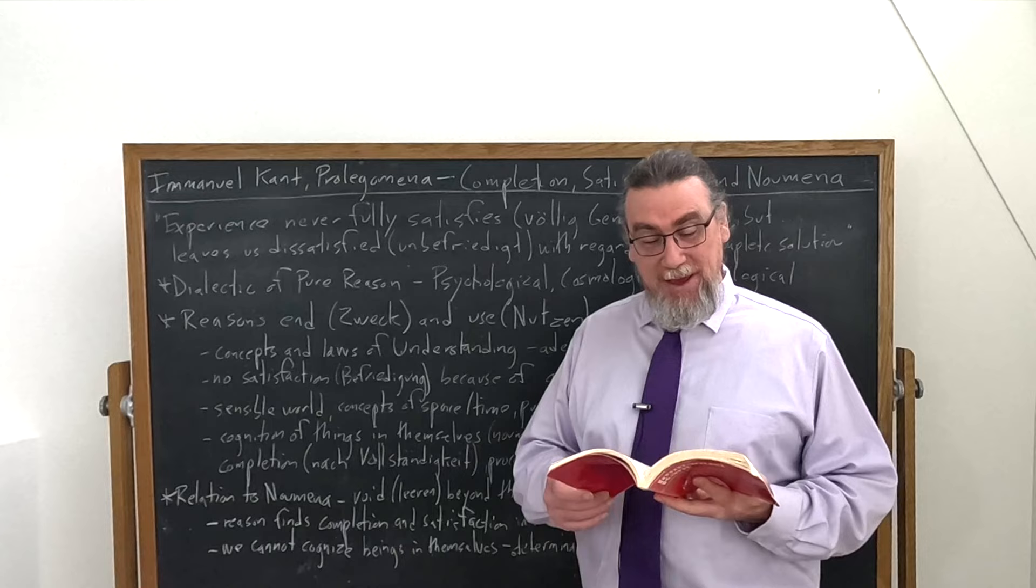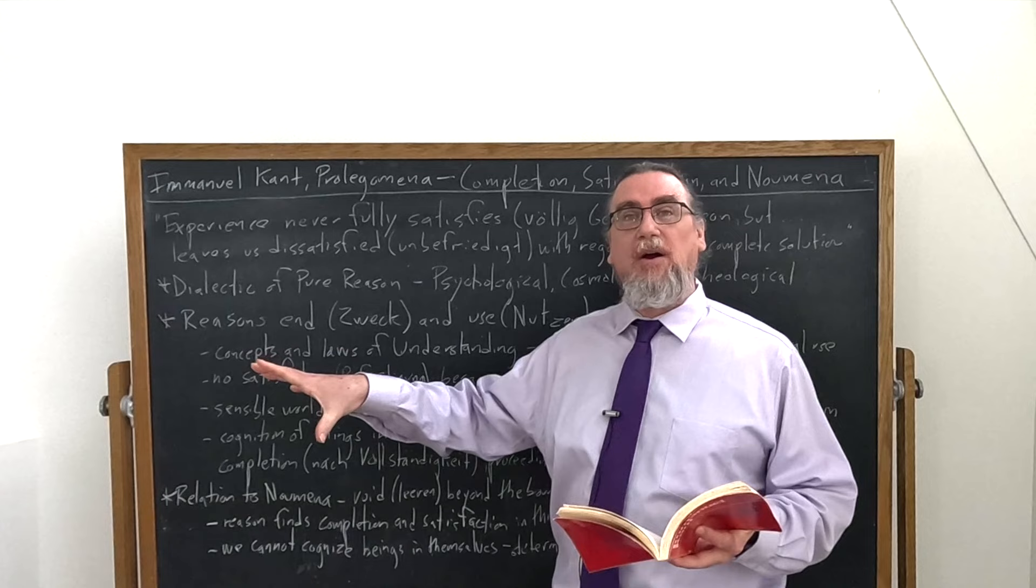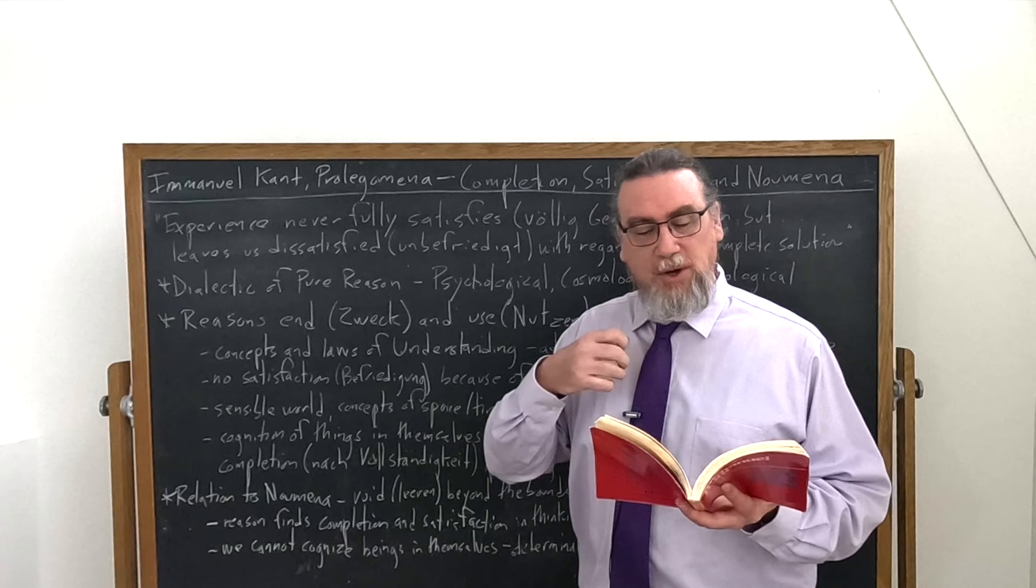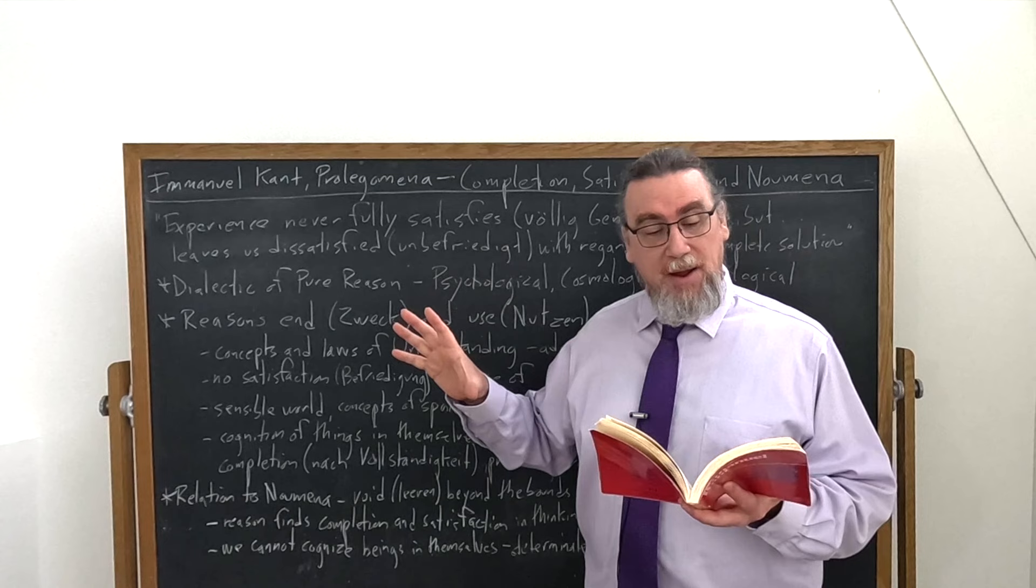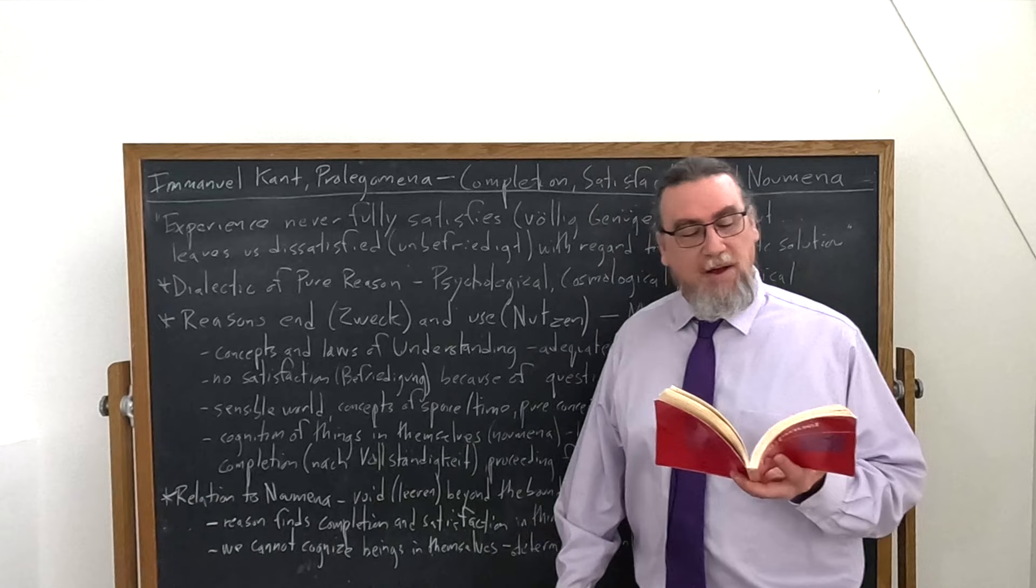So it's not just the sensible world itself. It's also, as he says, the concepts that we grasp in terms of space and time, and even the pure concepts of the understanding, like the categories, they don't give us a completion that we are inevitably, as rational beings through our faculty of reason seeking out. So we remain unsatisfied, even when we're satisfied with one part. We're like, that's good. This is excellent over here. It's just not everything I was looking for. So why? He says, the sensible world is nothing but a chain of appearances connected according to universal laws. As that, it's wonderful, but it doesn't have any subsistence by itself. It is not the thing in itself.